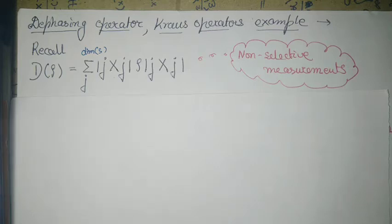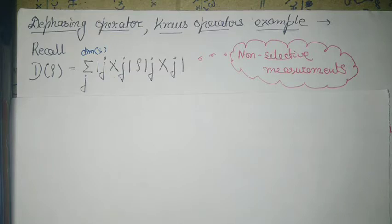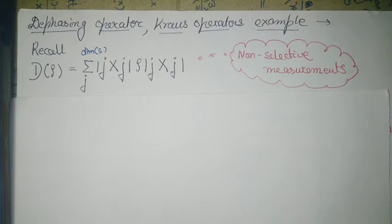In this video we will be discussing some examples of Kraus operators. I will also be discussing the axiomatic approach to quantum operations — the axiomatic approach or the completely positive trace-preserving (CPTP) map — which are very important approaches that help in generalizing many points of quantum operations.